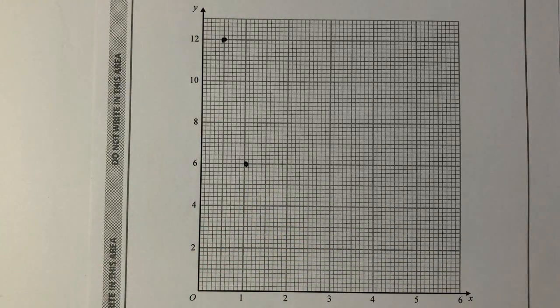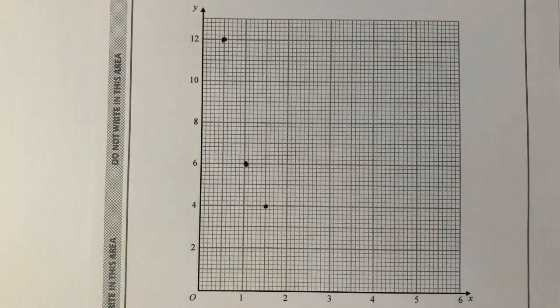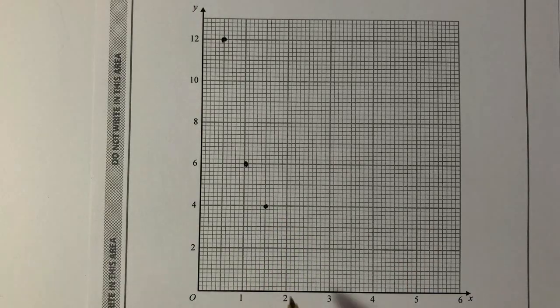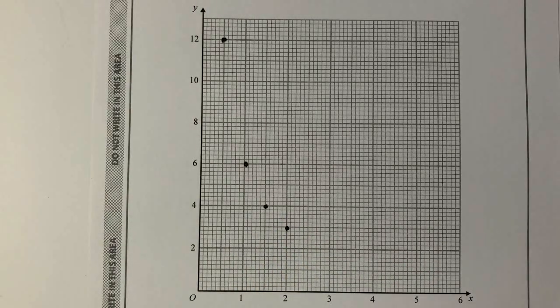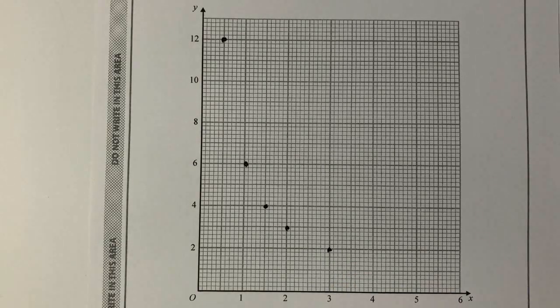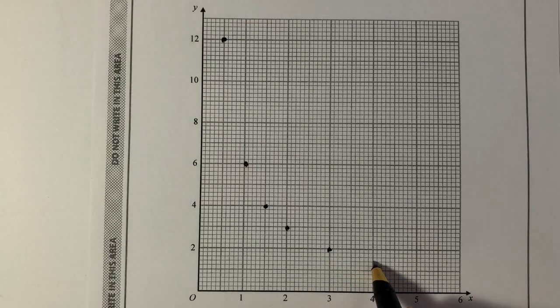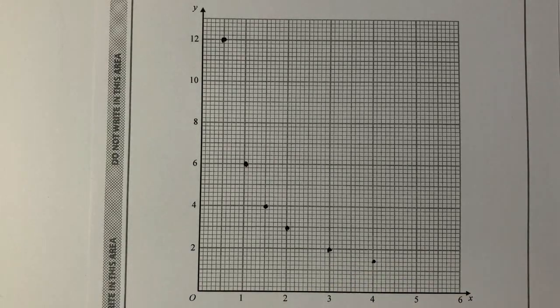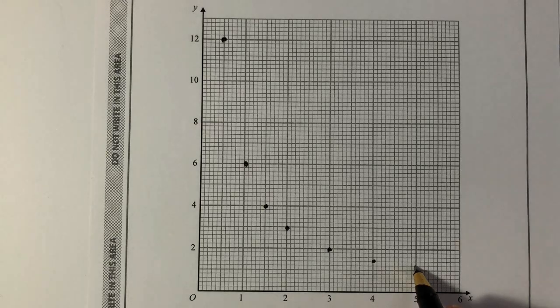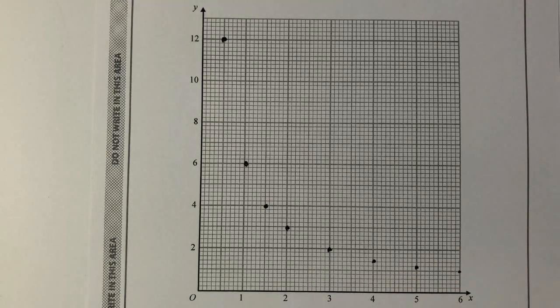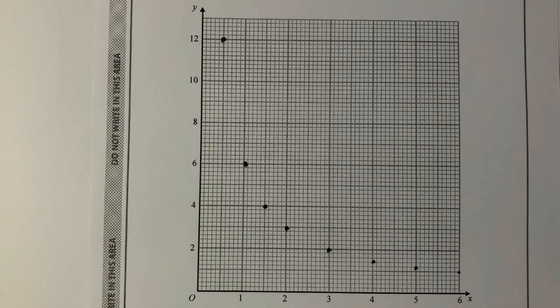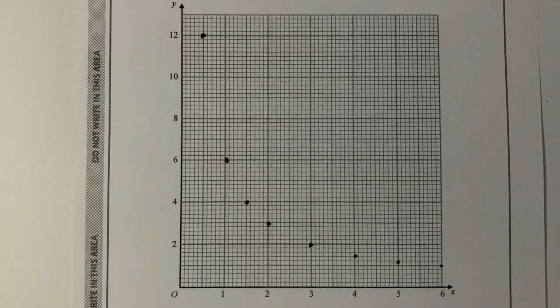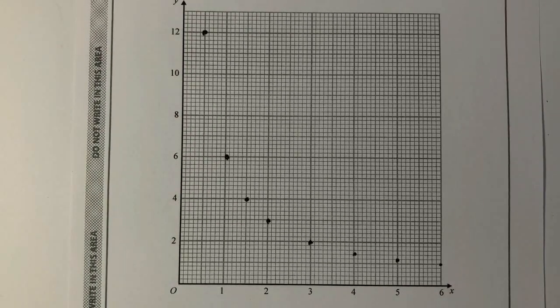Then I've got 1.5 to 4, that's going to go here. And then I've got 2 to 3, that's here. 3 to 2. 4 to 1.5 is about there. 5 to 1.2 is there. And then 6 to 1 is there. So with this particular one, and this is going to be really difficult to draw it on the screen, but I'll give it a go.